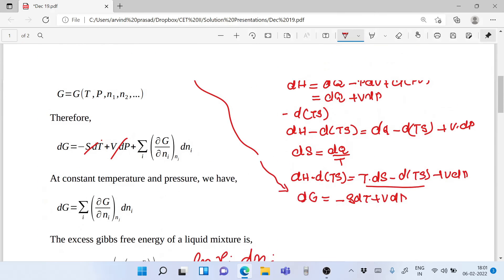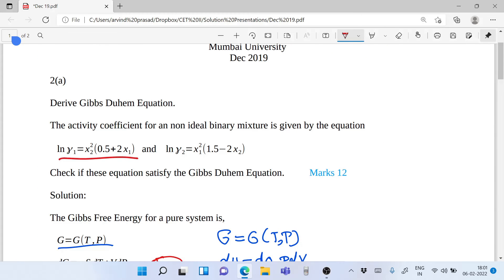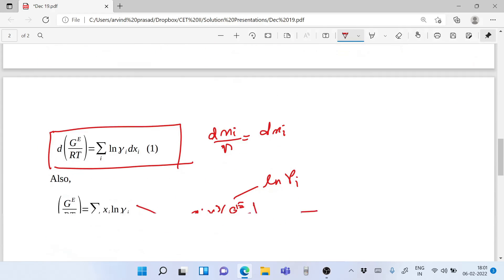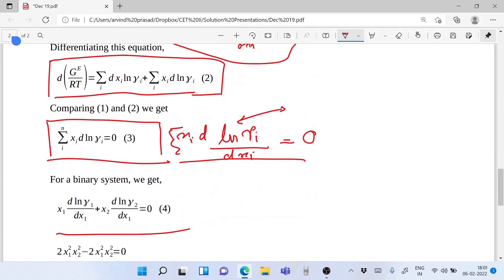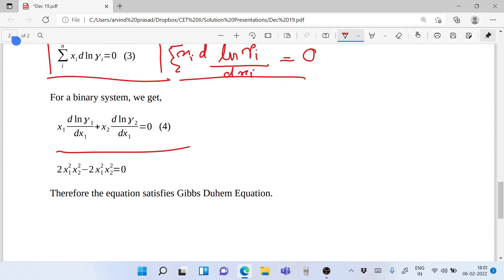For a binary mixture, we can divide this equation by dX1 and write it as in equation number 4. Differentiating ln gamma 1 and ln gamma 2 with respect to dX1 and multiplying with X1 and X2 - that is d ln gamma 1 by dX1 here and d ln gamma 2 by dX1 here - we get 2 X1 square X2 square minus 2 X1 square X2 square, and the sum of this equals 0. Therefore, the equation satisfies Gibbs-Duhem equation.